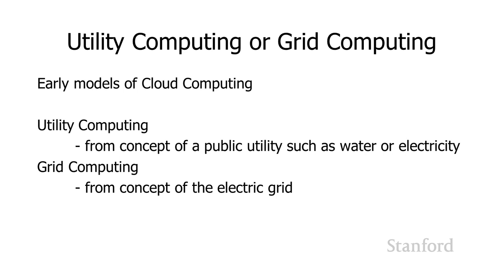The term utility computing comes from the concept of a public utility such as water or electricity, and grid computing takes its name from the concept of the electric grid. If you think about how the water system or electric grid works, there are certain interactions and expectations about what you do and don't need to do when working with that utility.